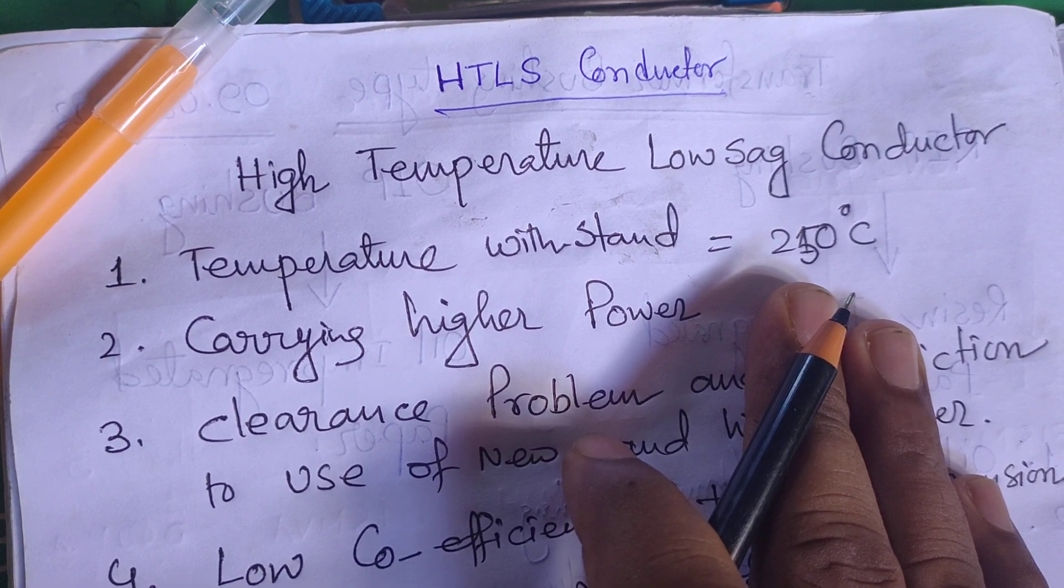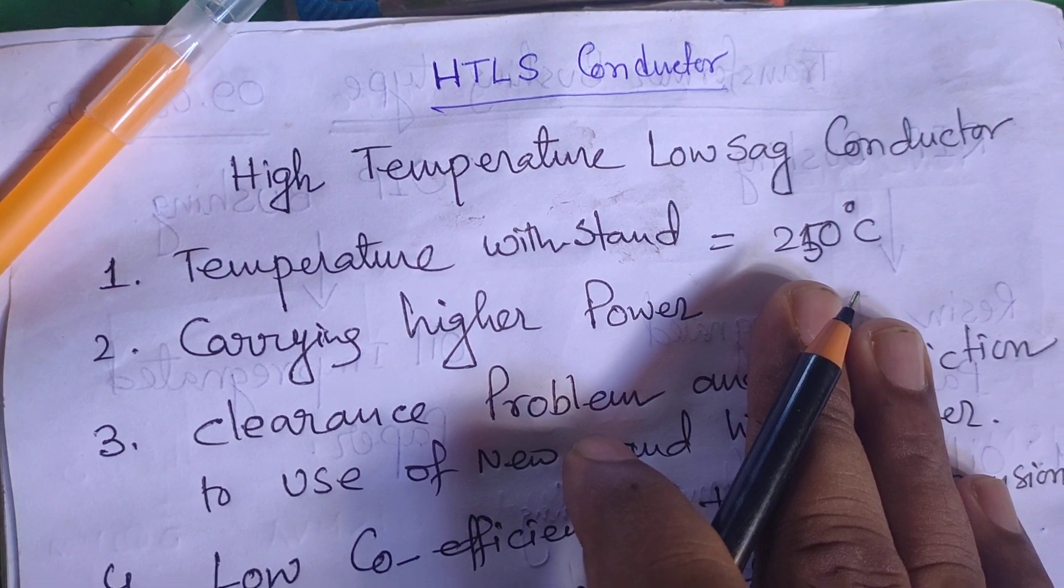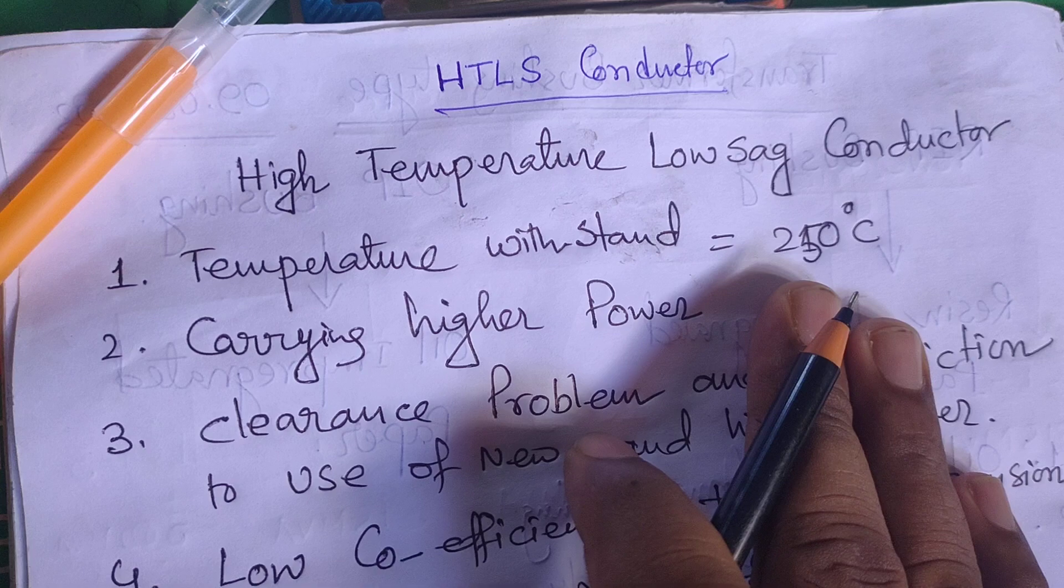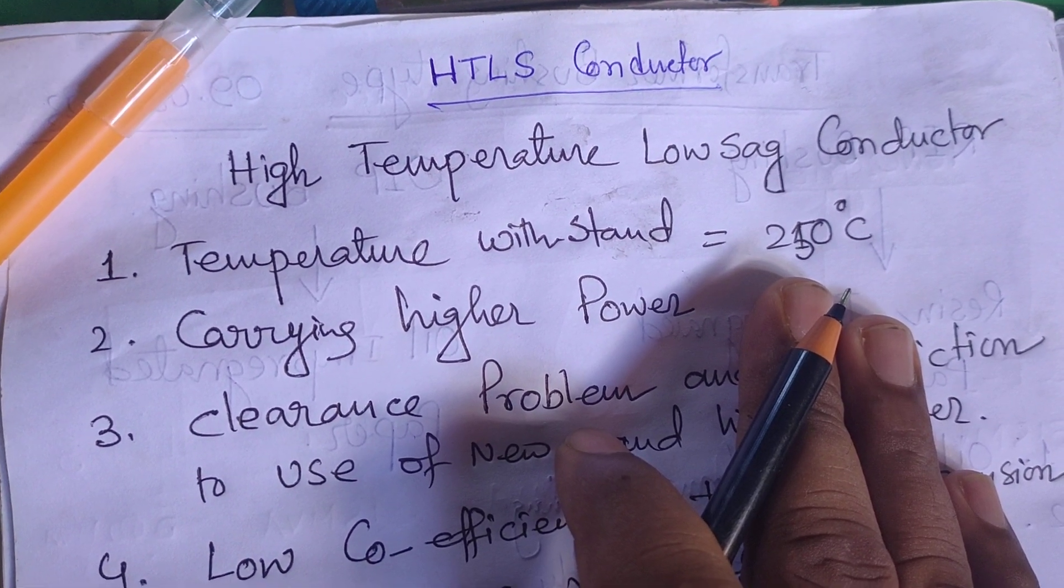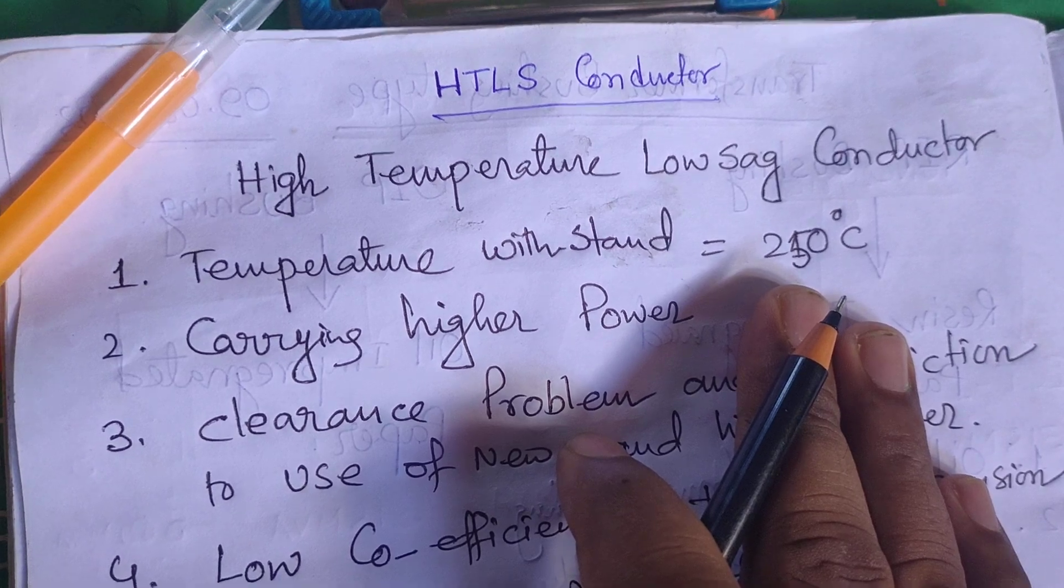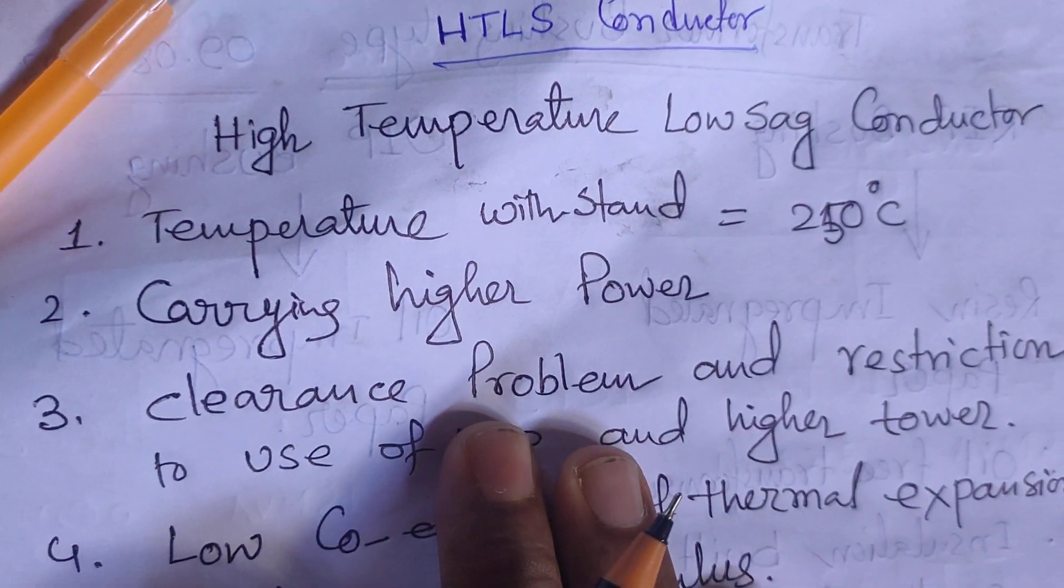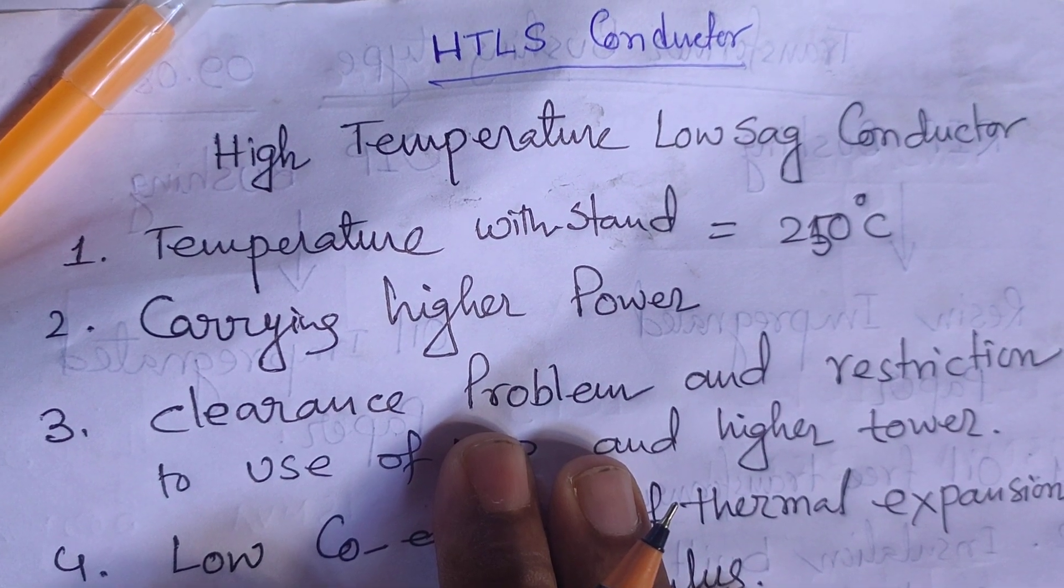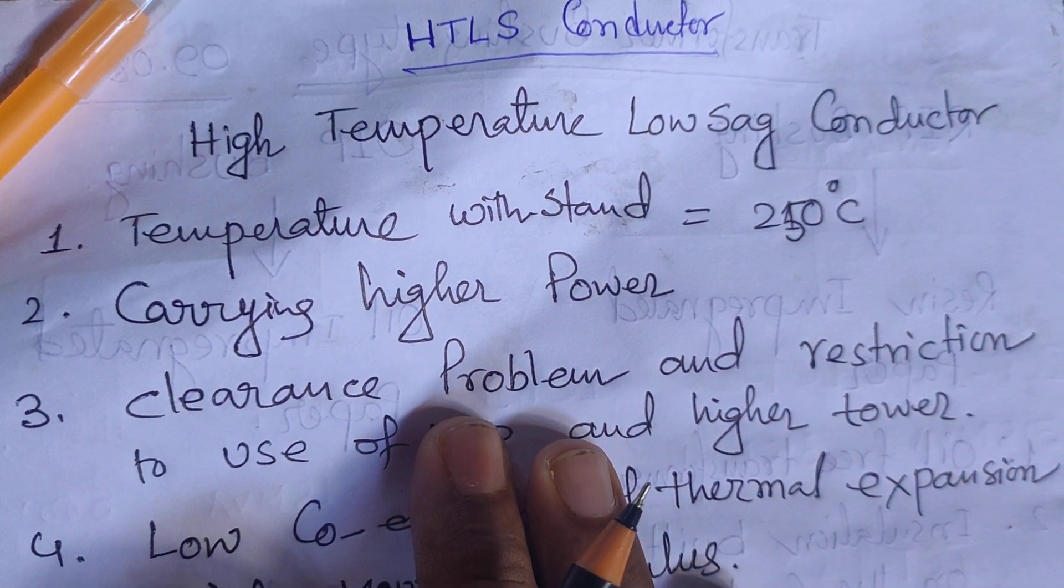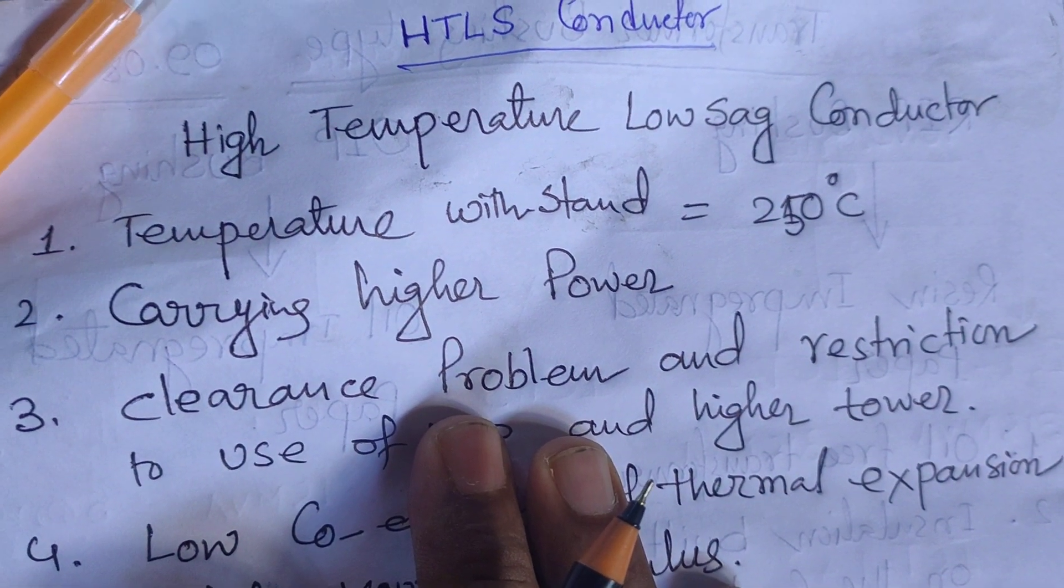The factors related to tower position, sag clearance, and old tower conditions are considered for installing HTLS conductors. The temperature withstand capacity of this conductor is 250 degrees Celsius. It has the capacity of carrying higher power, meaning higher amounts of current can pass while sustaining high temperatures without affecting performance or requiring further economic investment.